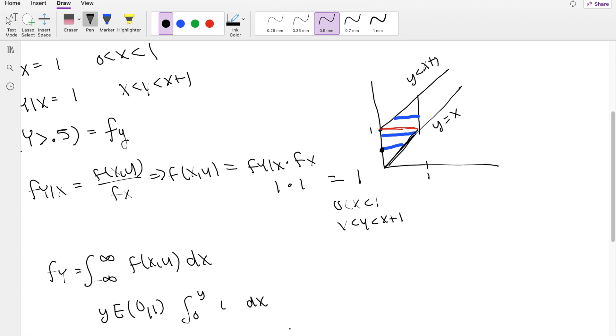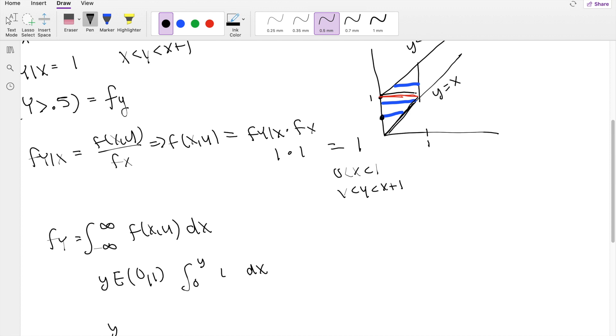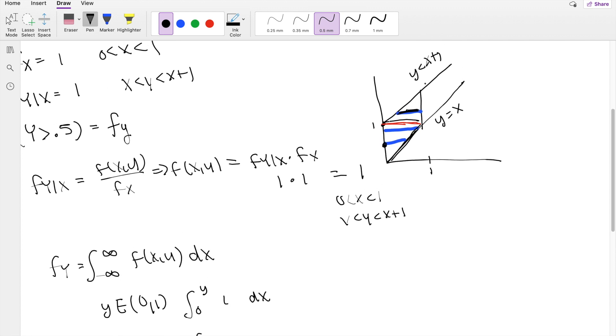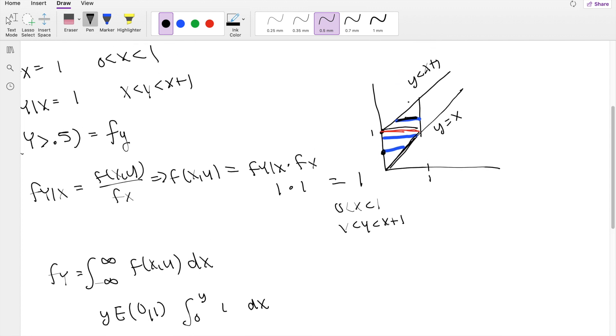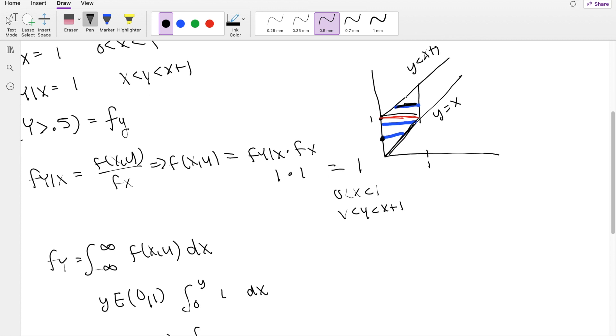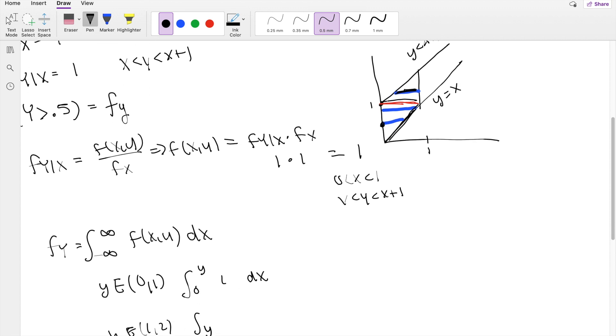But then if y is greater than 1, like after this red line, 1 to 2, then the lower limit is going to be this line y equals x plus 1. If we put it in terms of dx, it's going to be y minus 1, so y minus 1 is the lower limit. And the upper limit is just going to be 1, 1 dx.